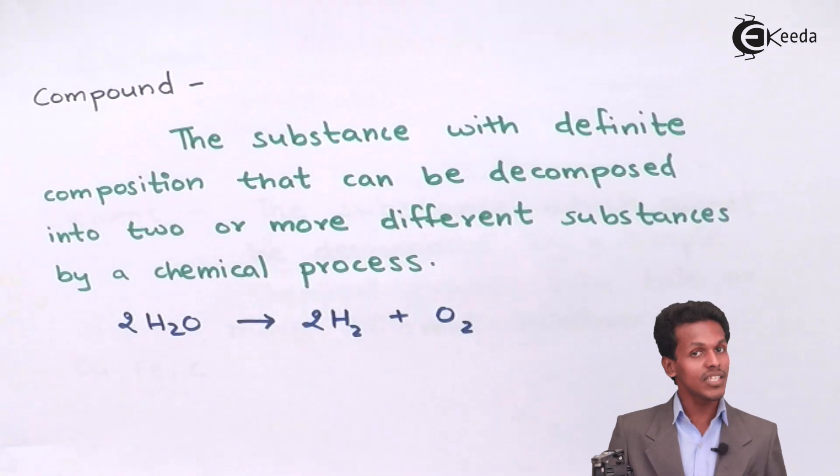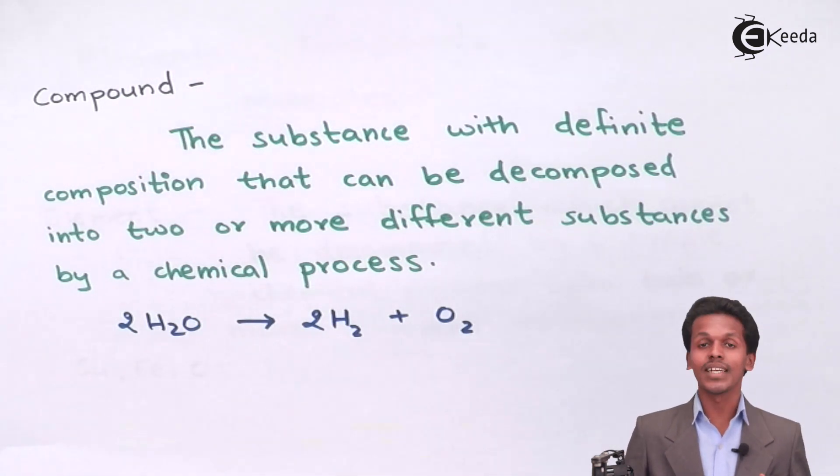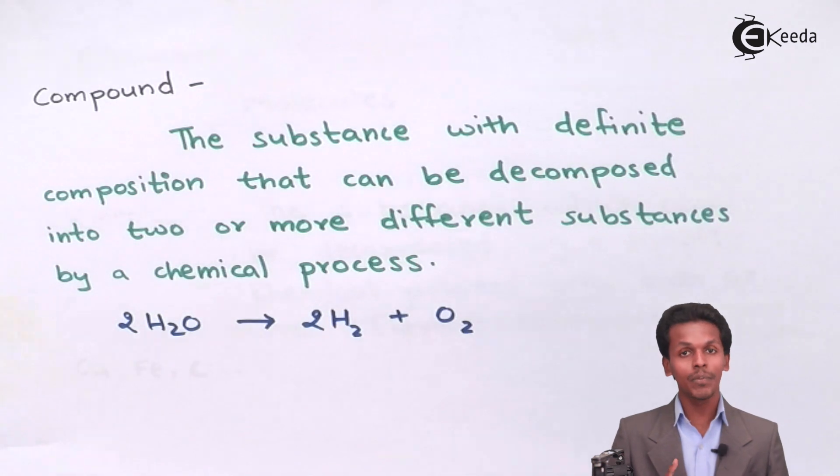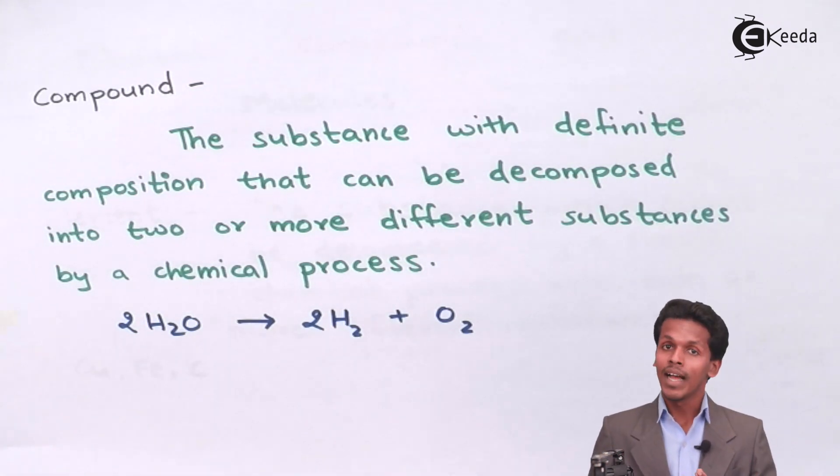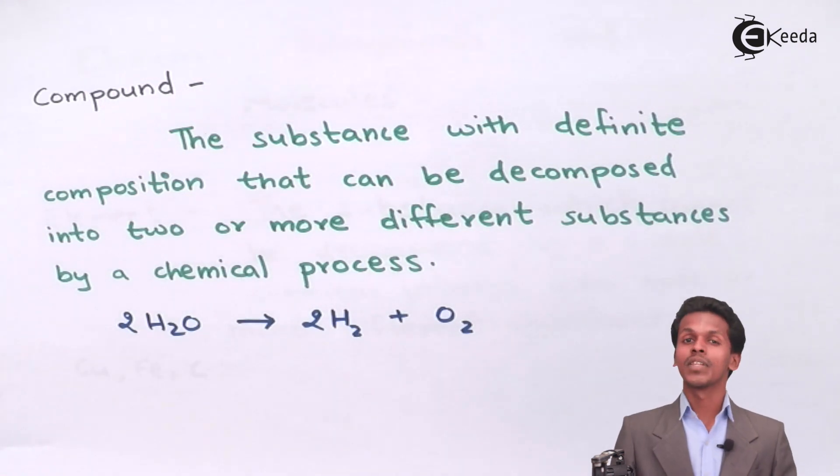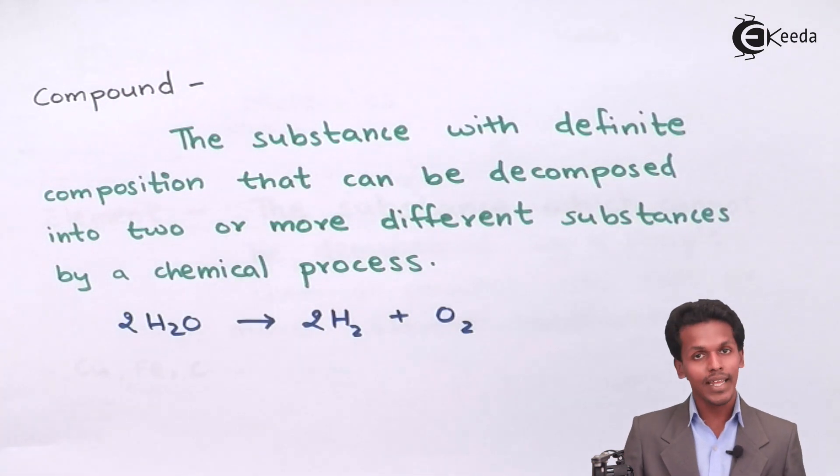It is very easy to understand. Let me talk about another example, that is ammonia. In ammonia, suppose if we decompose it, what we will get? We will get nitrogen as well as hydrogen atoms or hydrogen molecules. So similarly it is very easy to understand what a compound means.